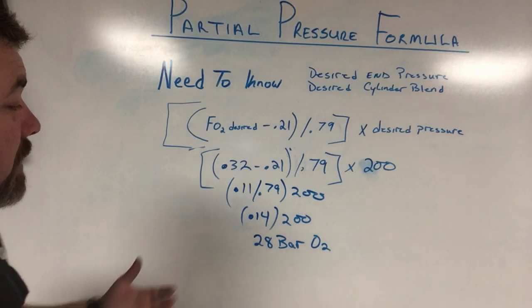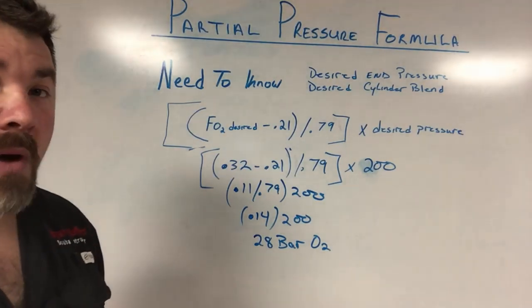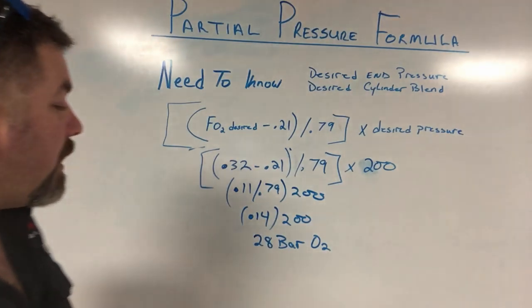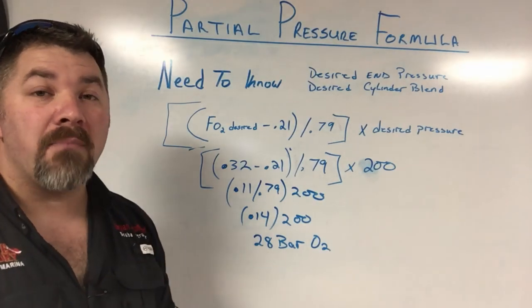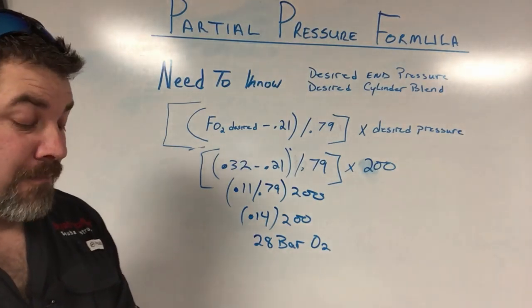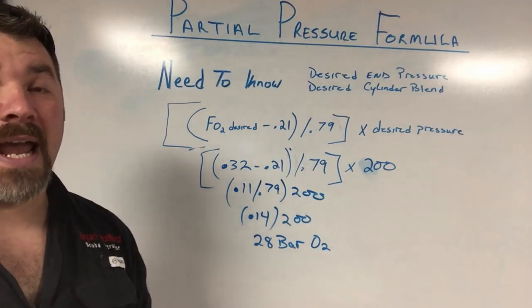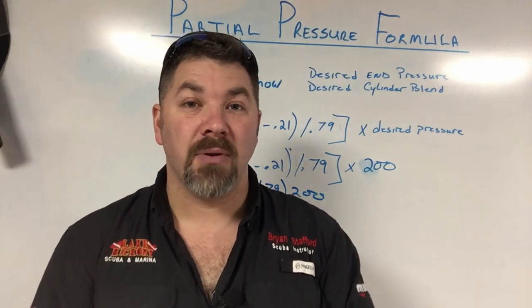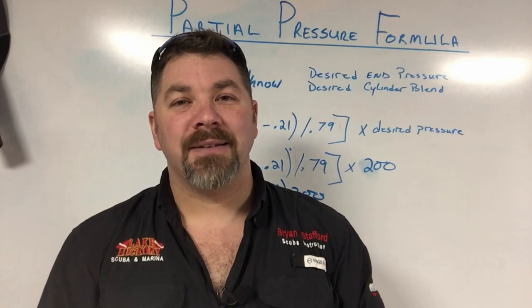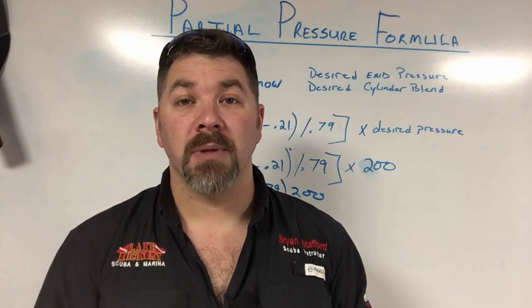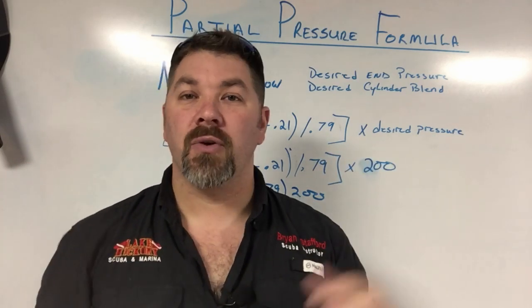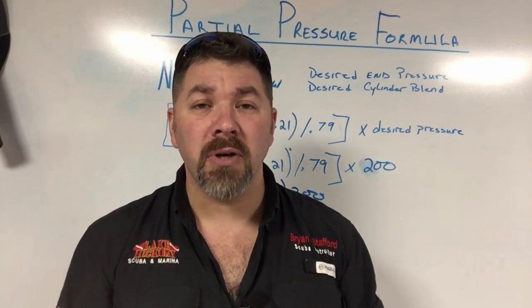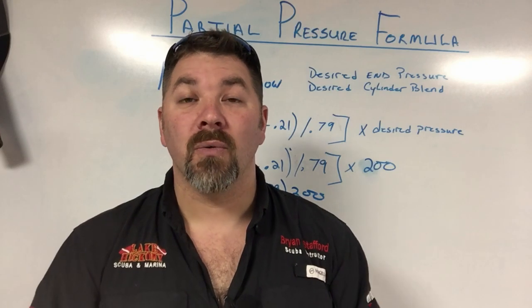So that tells me that in the metric system, that if I want a cylinder filled to 200 bar with 32% and I'm partial pressure blending, once again, I'm putting the oxygen in first and then mixing it with air, I need to fill that cylinder up to 28 bar of pure 100% oxygen and then mix the rest with standard breathing gas or air. And that mixture, that partial pressure process is going to give me that desired blend of 32%. So guys, I hope you liked this video. I hope you can see it's not very difficult to understand partial pressure blending. All we're doing is just mixing up different ingredients. We just need to understand how many ingredients or how much of a particular ingredient that we need to put in there to get our desired mixture.